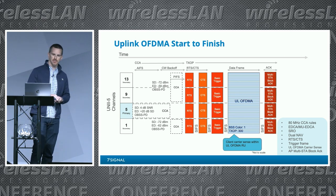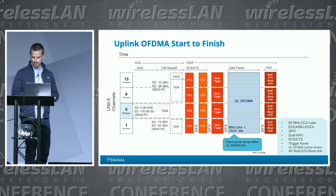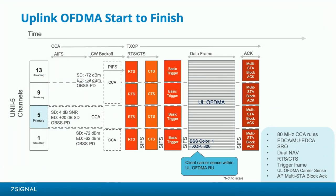The last step is a duplicated multi-station block ACK sent in the downlink. I'm showing this example with OFDM-modulated frames for the block ACKs and triggers - they don't have to be, but that seems to be the most common implementation. It makes sense because that gives legacy PHYs the ability to read the duration fields.